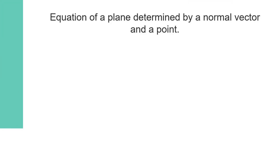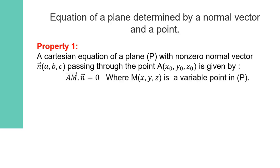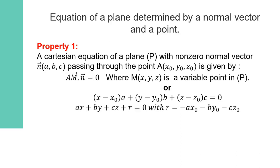Equation of a plane determined by a normal vector and a point. Property 1: A Cartesian equation of a plane P with non-zero normal vector N, passing through the point A(X₀, Y₀, Z₀), is given by the dot product of vectors AM and N equal to 0, where M is a variable point in P. The analytic form is: A(X − X₀) + B(Y − Y₀) + C(Z − Z₀) = 0. The reduced form is: AX + BY + CZ + R = 0, where R = −AX₀ − BY₀ − CZ₀.